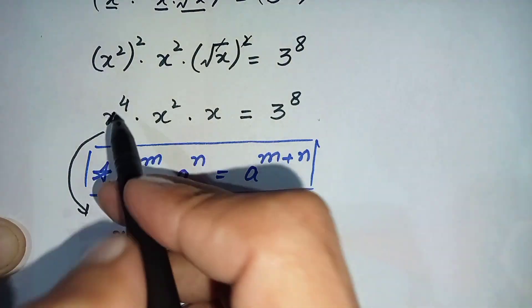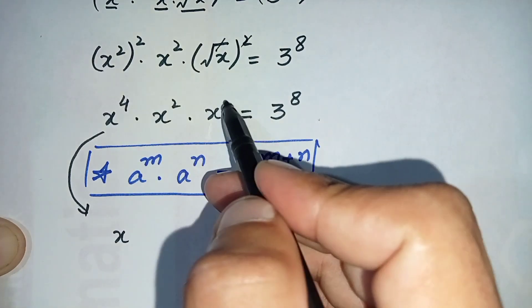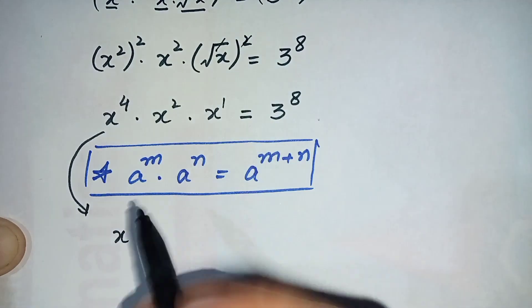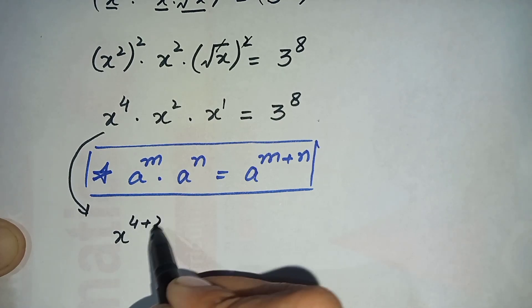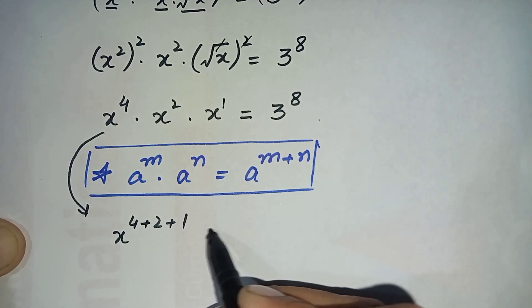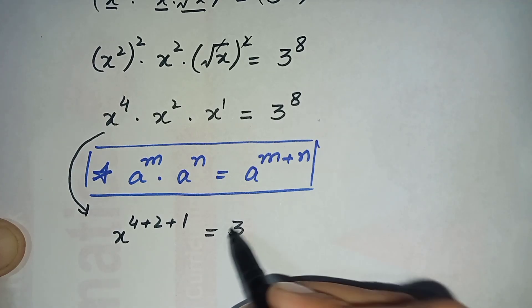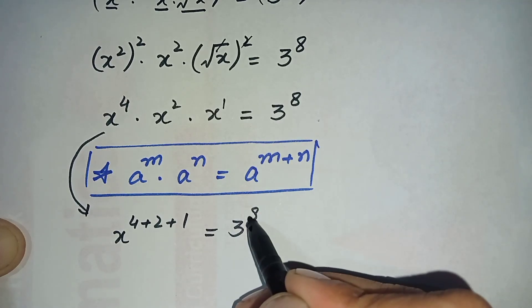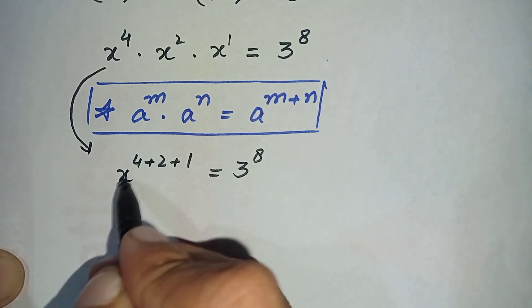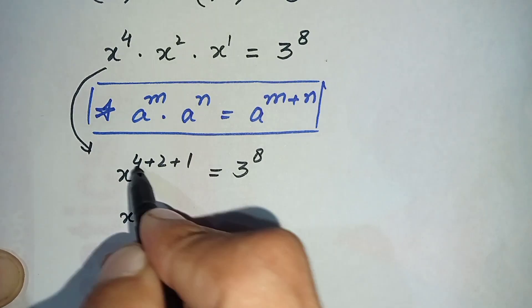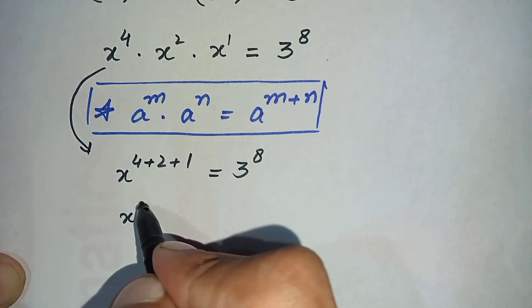The base x is the same, so we add their powers: 4 plus 2 plus 1. Adding the powers: 4 plus 2 is 6, and 6 plus 1 is 7.